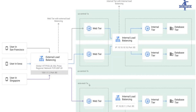One instance is in US East 1A, one is in US Central 1B, and one is in US Central 1A. These are in a single region with two different zones, and there is another region. You can also see the internal tier and database tier. This is a simple architecture of a three-tier application.